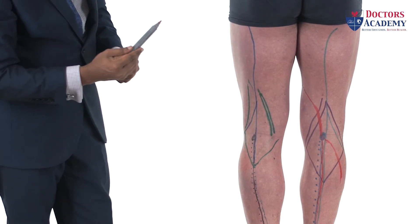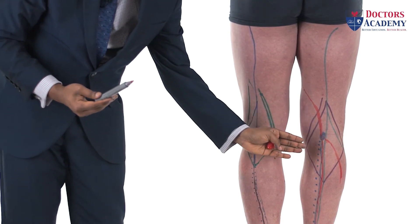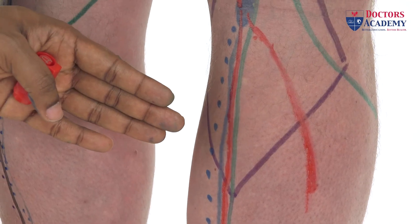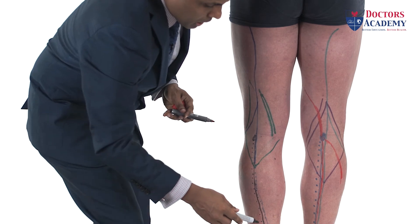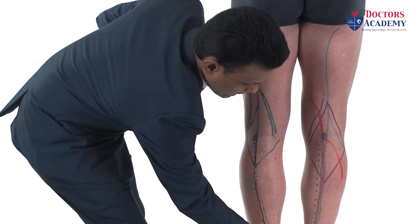Just coming back to the relationship between the posterior tibial artery and the tibial nerve. Both these structures run behind the medial malleolus in the leg.